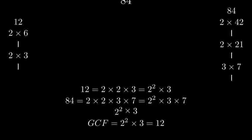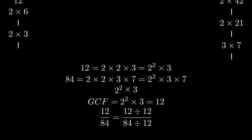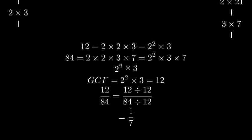To simplify our fraction, we divide both the numerator and denominator by the greatest common factor. 12 divided by 12 is 1, and 84 divided by 12 is 7. So our simplified fraction is 1 seventh.